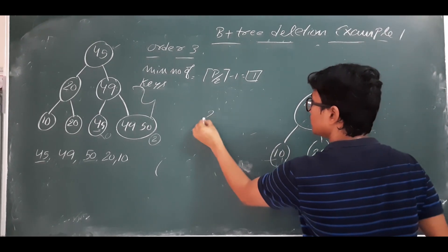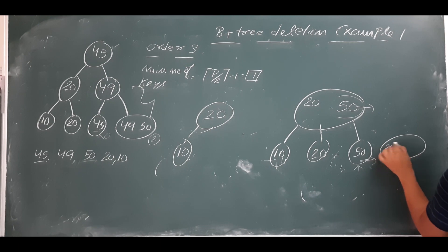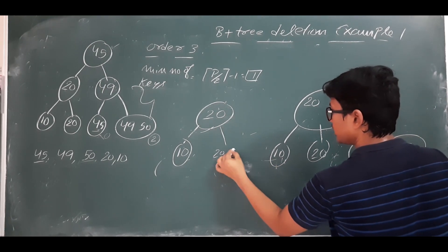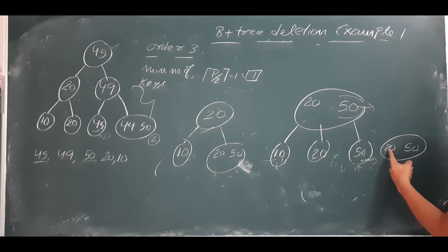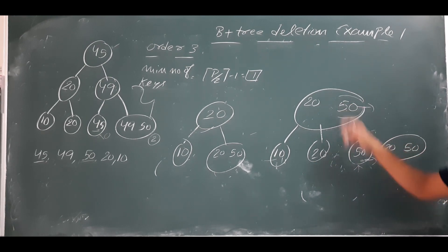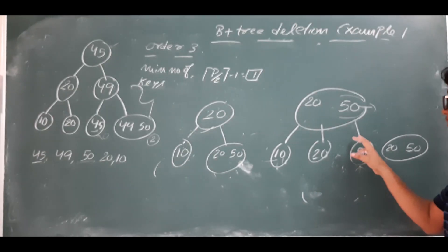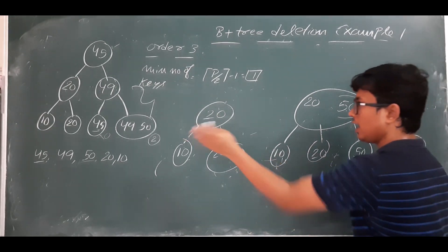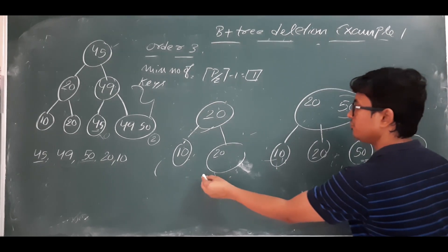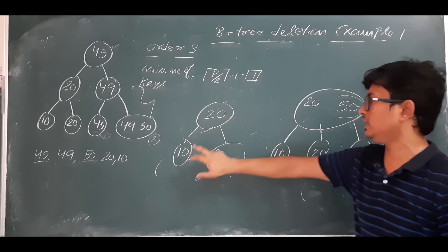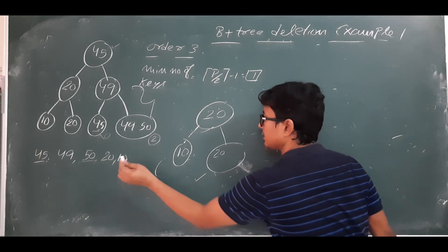After merging, we get 10, 20, and 50 in the merged leaf. The parent entry 50 is deleted. If we did not delete it, there would be a repetition of 50. Note that 50 was deleted as part of the merging process — the intent was to delete 50 from the tree. After deleting 50, the B+ tree looks like: root is 20, with leaf children 10 and 20.